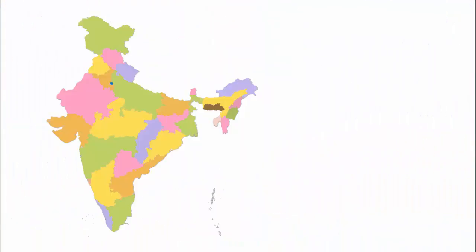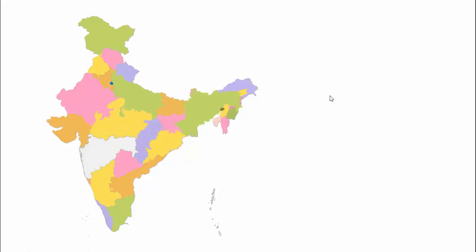In today's tutorial I am going to show you how to create an animated India map slide in PowerPoint. This is the India map with a different color combination for each state. Each state has been given a different color, and how this slide works is when I click, the details of each state — like the area, the population, the culture, or any other details you want — you can just add them here in an animated way.